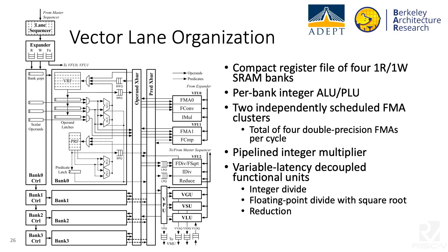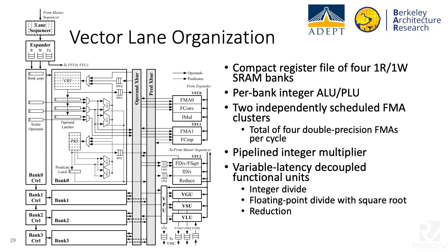The lane is structured around four identical banks, each with a high-density one-read, one-write SRAM-based register file, a flip-flop-based predicate file, a local integer ALU, and a predicate logic unit. The banks are connected by crossbars to long-latency functional units, including two independently scheduled fused multiply-add clusters providing a total of four double-precision FMAs per cycle, a pipelined integer multiplier, and variable-latency decoupled functional units such as integer divide and floating-point divide with square roots and reductions.